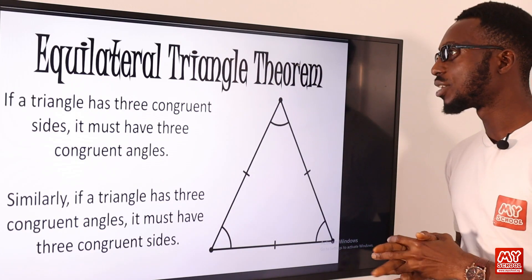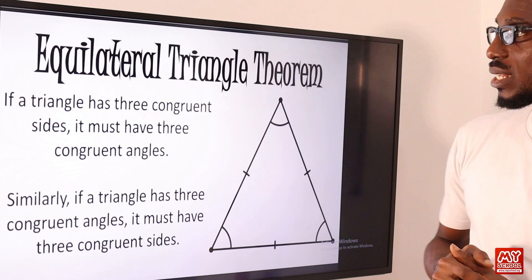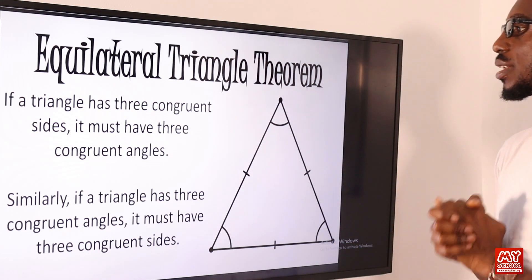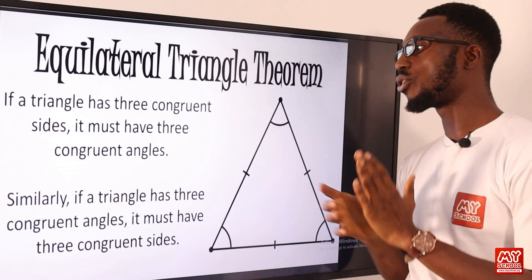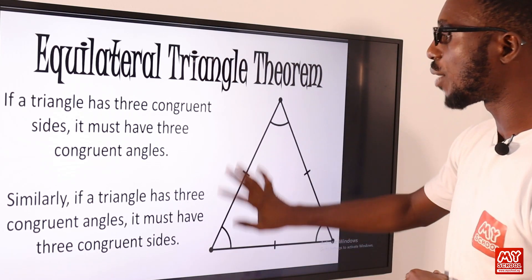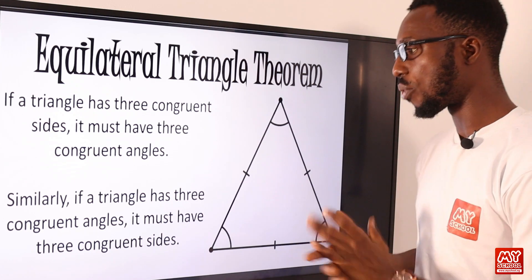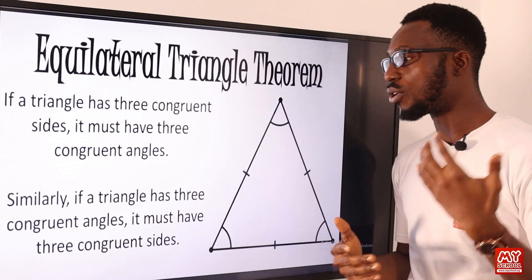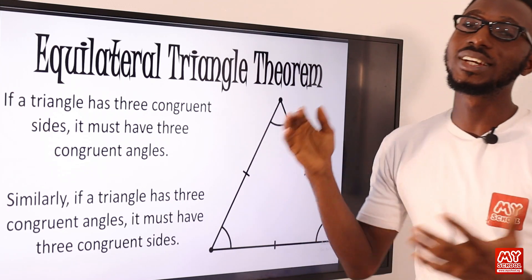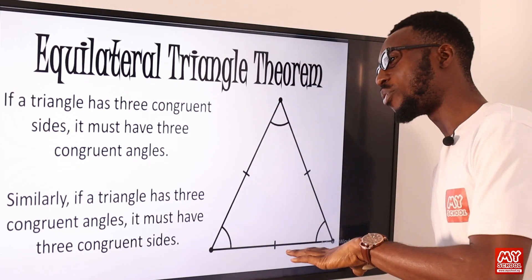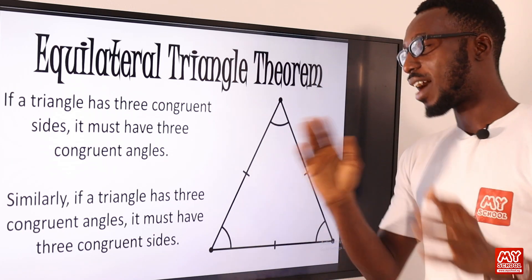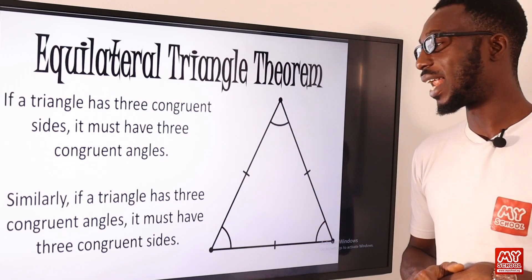We have the equilateral triangle theorem. If a triangle has three congruent sides, it must have three congruent angles. Similarly, if a triangle has three congruent angles, it must have three congruent sides. So once the three sides are equal, the three angles should be equal, and vice versa — the flip is well balanced.